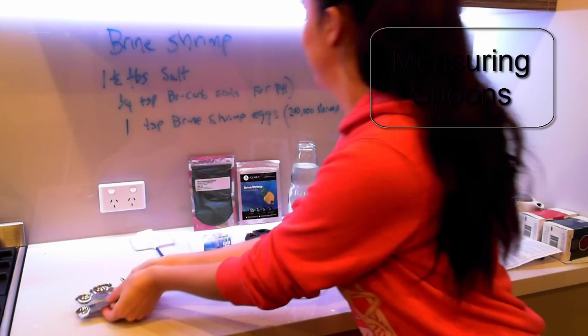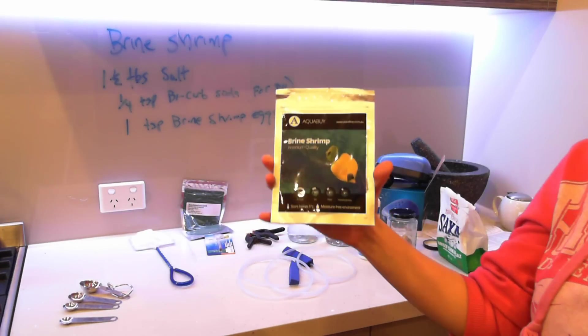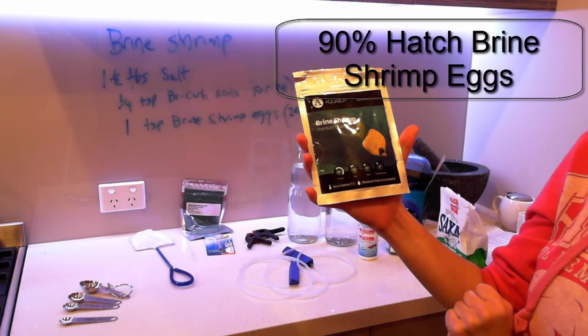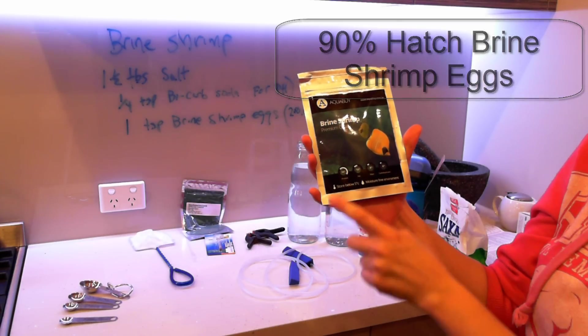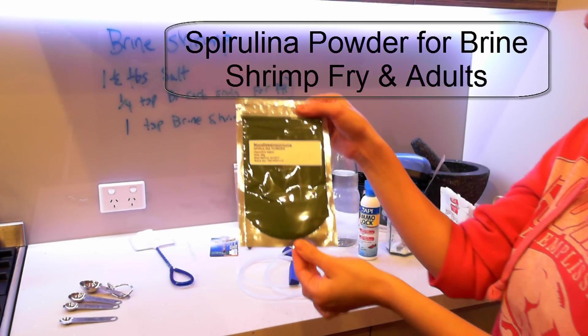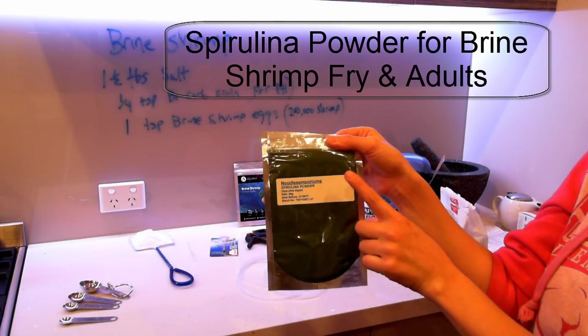You'll need a variety of measurements there. You're going to need brine shrimp eggs. I went for a 90% hatch rate, so that's a really high quality. And also, we have some spirulina here. That will also feature in part two. We're just going to feed that to our little friends.